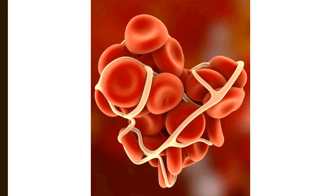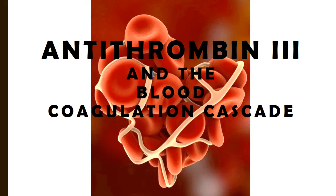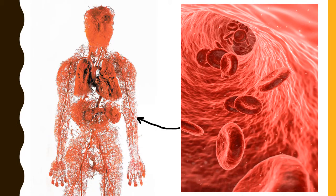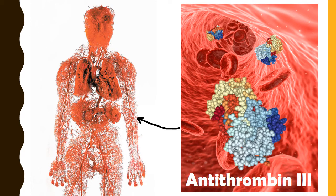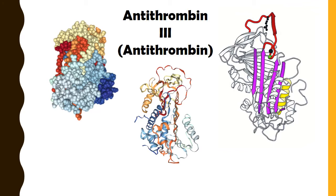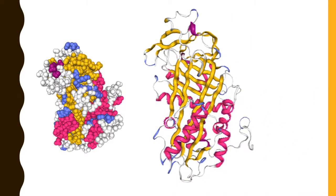Welcome. Gather around class so I can tell you the story of Antithrombin III and the blood coagulation cascade. Our story begins in the human body with our hero, Antithrombin III. For the longest time, Antithrombin III went unrecognized for all the good he did. As Antithrombin III is the only medically relevant Antithrombin, we'll call him Antithrombin for short, for that's how most people refer to him currently.